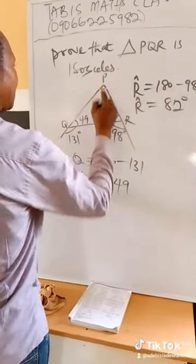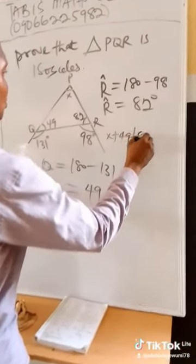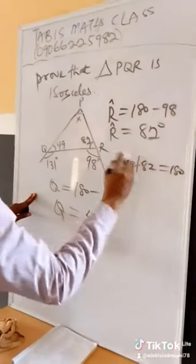So now let's represent this angle as X. So it will be X plus 49 plus 82 equals 180, the sum of angles in a triangle.